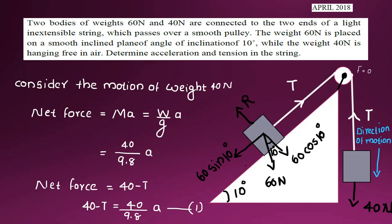The direction of motion is determined by the heavier weight. For the 40 N weight, the direction of motion is downward. If the forces are in the direction of motion, they are positive; if opposite, they are negative.